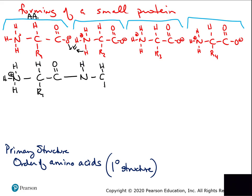Each connected amino acid follows the same pattern: nitrogen with hydrogen, middle carbon with hydrogen and R group, carbon with double-bond oxygen. Each time a peptide bond forms, two hydrogens are removed from the nitrogen and one oxygen from the adjacent carbon — they form water — and a C-N link is created. You get a repeating pattern: nitrogen-carbon-carbon linked to nitrogen-carbon-carbon throughout the chain.